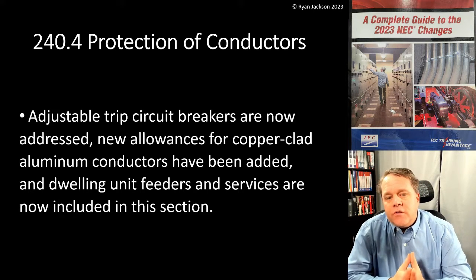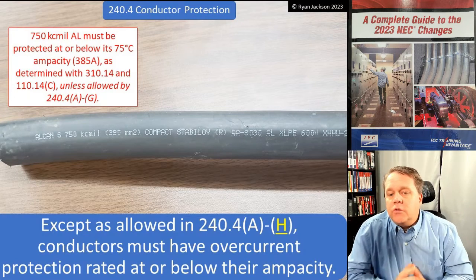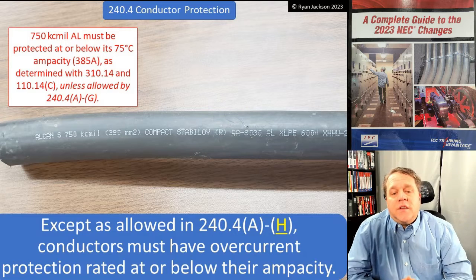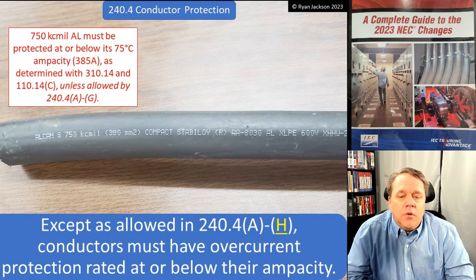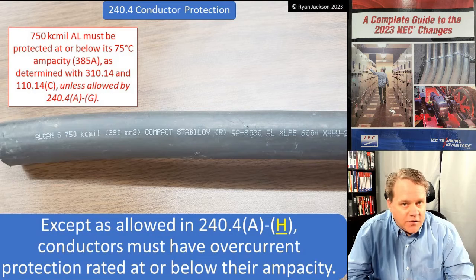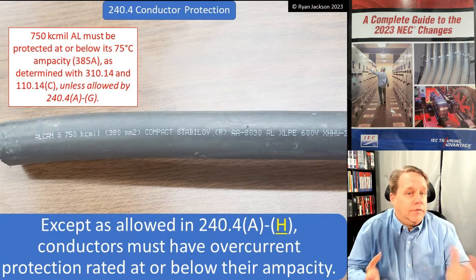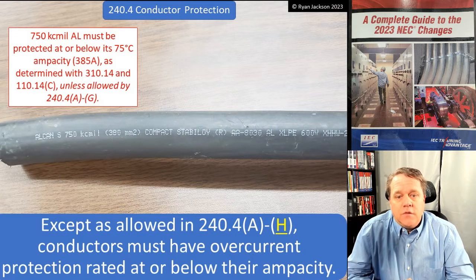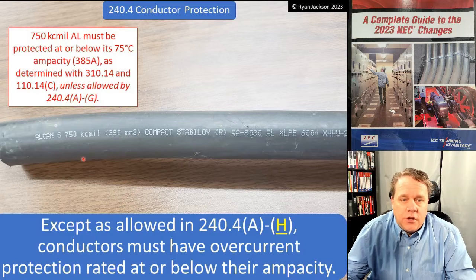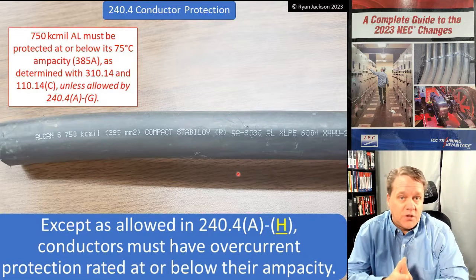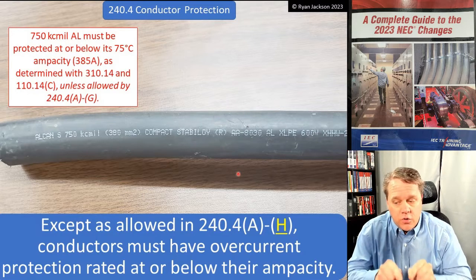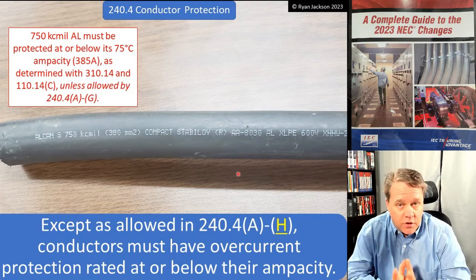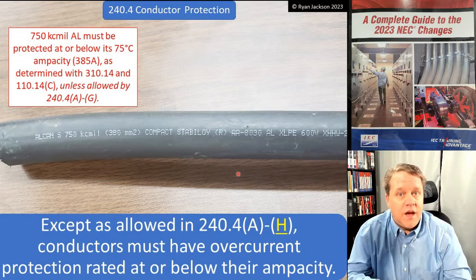240.4 starts with a general requirement: except as allowed in (A) through (H), conductors must have overcurrent protection rated at or below their ampacity. The ampacity of a conductor is the amount of current it can carry continuously without exceeding its temperature rating. For example, 750 kcmil aluminum at the 75-degree column — we use 75 degrees because of 110.14(C) for termination ratings — has an ampacity of 385 amps.